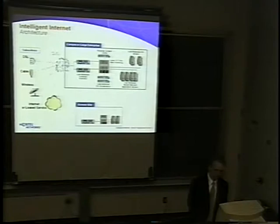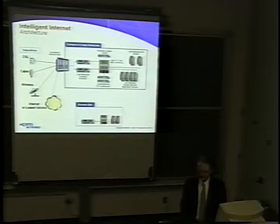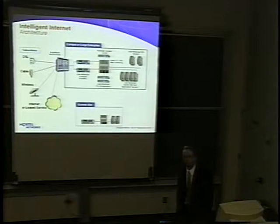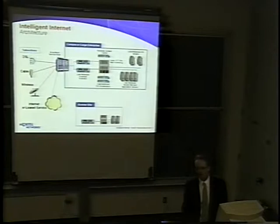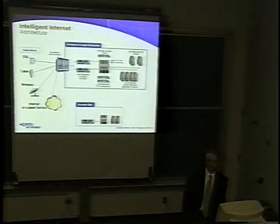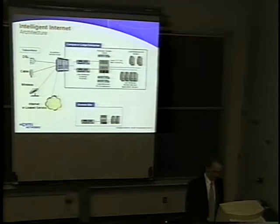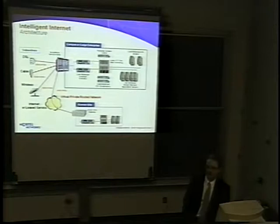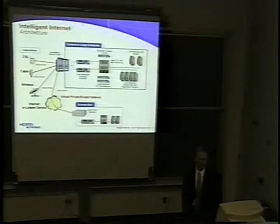Next is the broadband service node, which provides universal link aggregation for subscribers regardless of the protocol or media type used to access the network. A broadband service node also offers IP security services such as IPSec, virtual private routed networks (VPRNs), virtual stateful firewalls, and authentication services such as RADIUS and LDAP. Finally, the last component is typically a smaller premise-based customer VPN switch capable of IPSec tunneling back to the BSN.